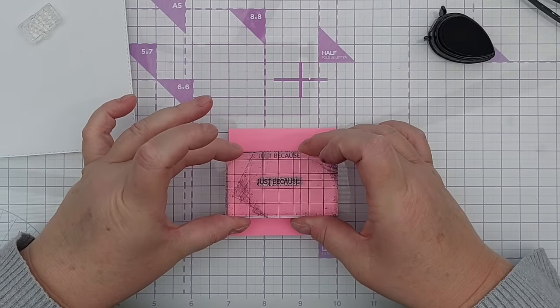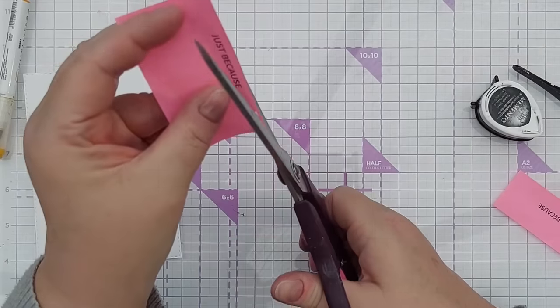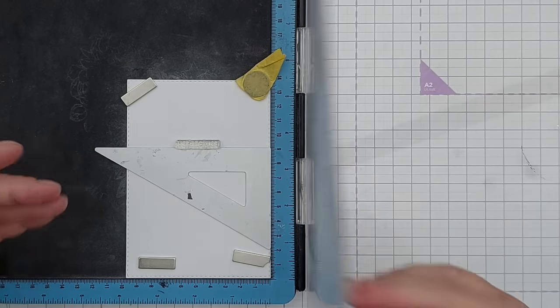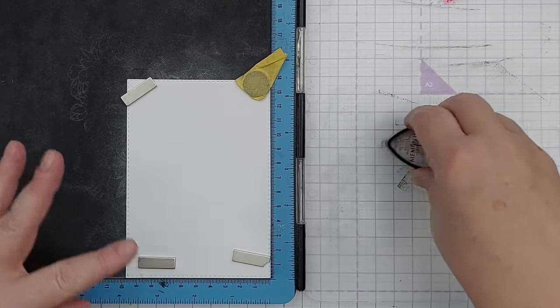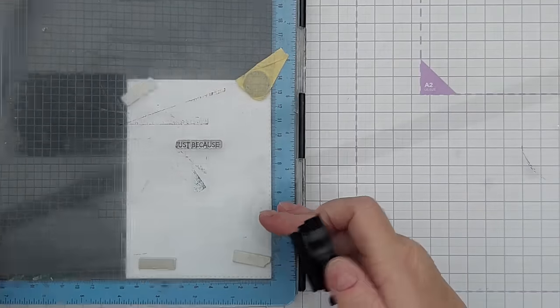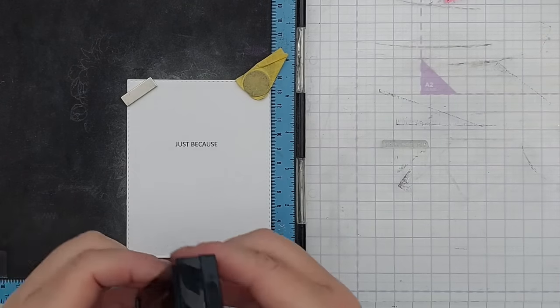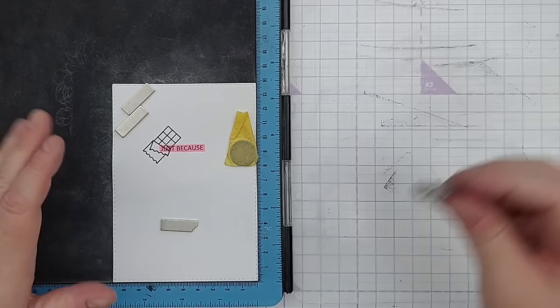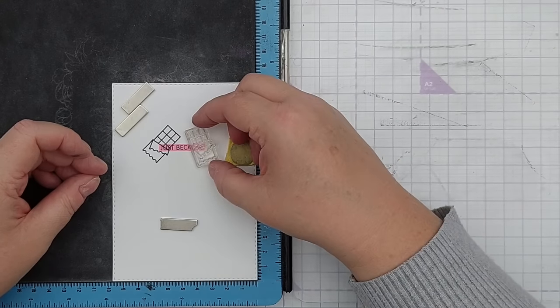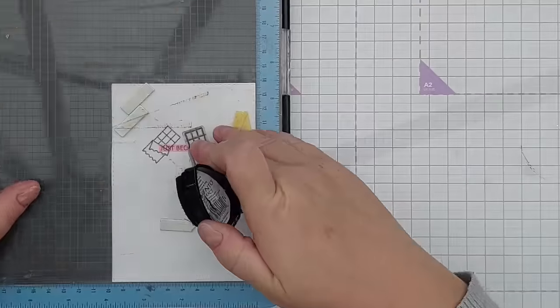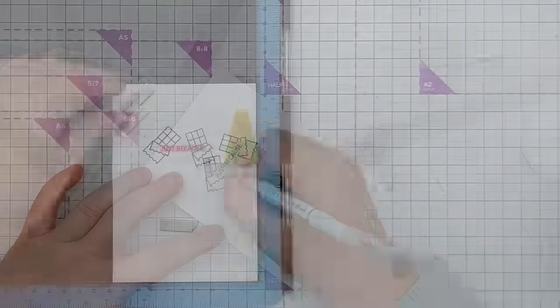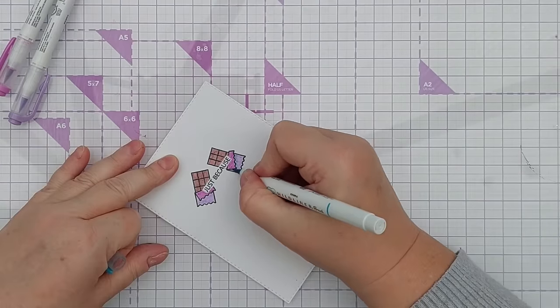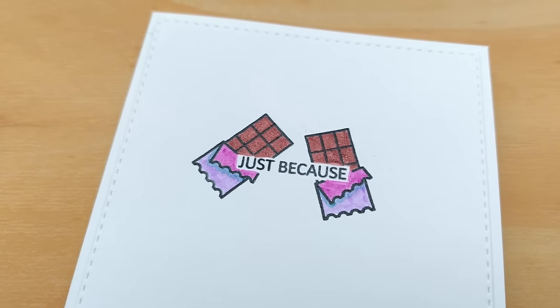For this card, instead of masking off my image, I'm going to mask off my sentiment. So I'm going to carefully cut this out. I'm going to heat emboss again, but I'm going to put my sentiment down first this time. I've treated this with anti-static powder and I'm using Memento, cleaning that off and adding Versamark. Now I'm going to pop that as accurately as I can over there. So there we have our sentiment on top of our image. Now I can color this in. There we have a Just Because card featuring chocolate with the sentiment layered on top of the images.